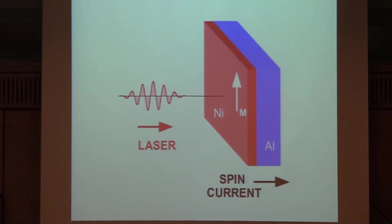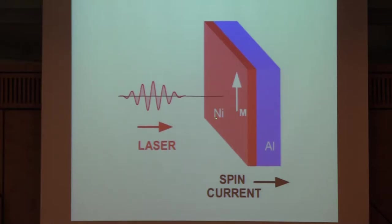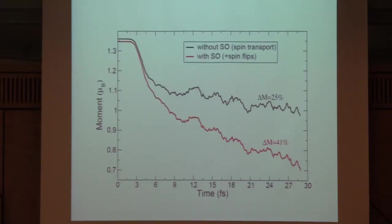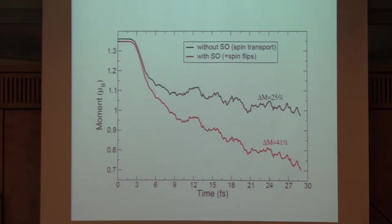Here is another calculation: an interface of three monolayers of nickel and five monolayers of aluminum. We observe a laser-induced spin current from nickel to aluminum. Comparing the calculation without and with spin-orbit coupling shows that both the transport—the spin current from nickel to aluminum—and spin-orbit coupling are important on these short time scales.